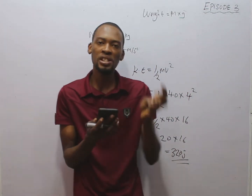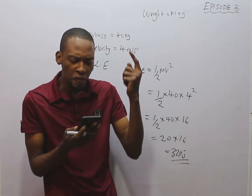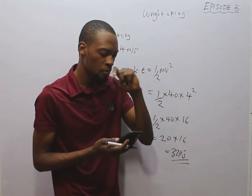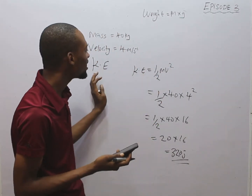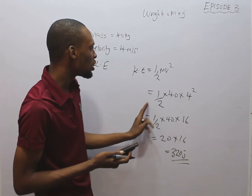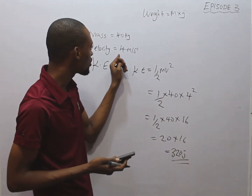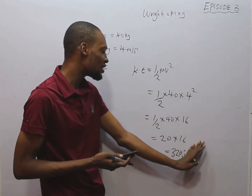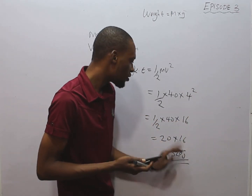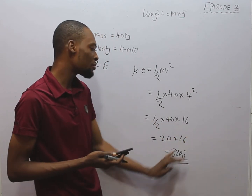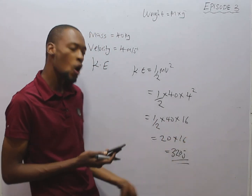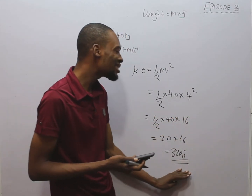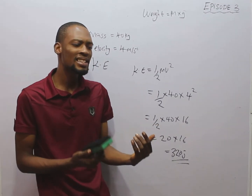To re-read the question: a body of mass 40 kg moves with a velocity of 4 meters per second — calculate the kinetic energy. KE = ½mv²: ½ × 40 × 4² = ½ × 40 × 16 = 1 × 40 × 16 ÷ 2 = 320 joules.